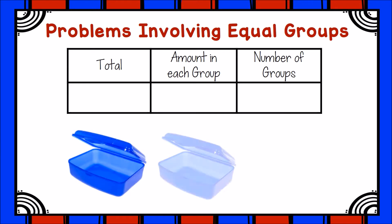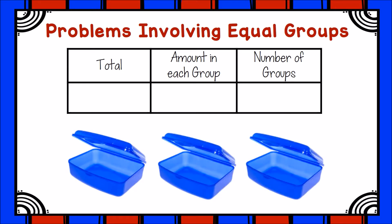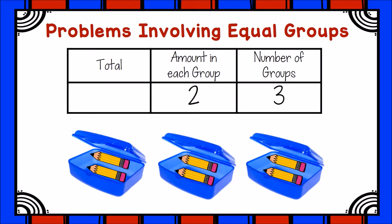There were three boxes of pencils and each box held two pencils. Now we know the number of equal groups is three or the number of boxes is three. We also know the amount that goes in each group or each box is two. We just don't know the total amount of pencils.